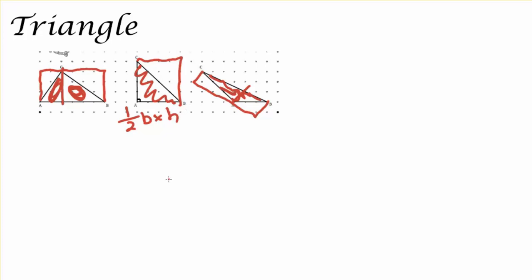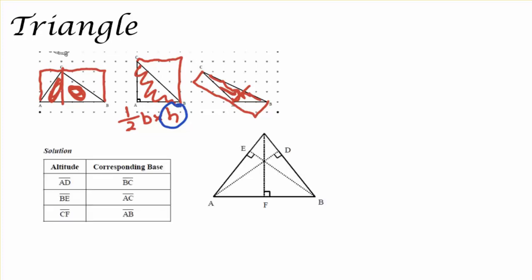Now, it's important to make sure that you're using the correct base and height. In particular, looking at height, we want to make sure we're always using the altitude. Each triangle has three altitudes and it depends on what the base is. So if I look at this example of this triangle, the altitude AD must be paired with its corresponding base BC. If you're going to use BE, you go with AC. And if you're going to use CF, you got to go with AB. Making sure you use the correct base and height, the correct altitude, the correct corresponding base will ensure you get a correct answer.